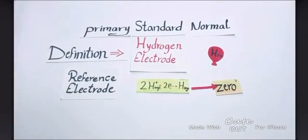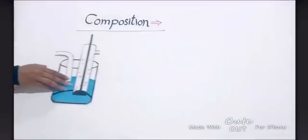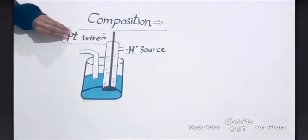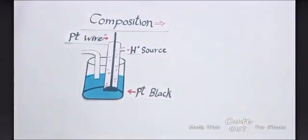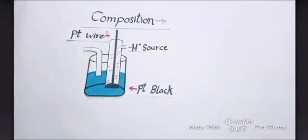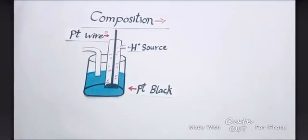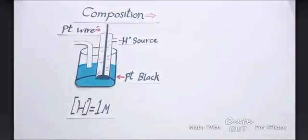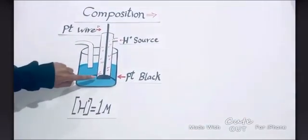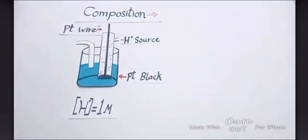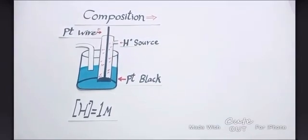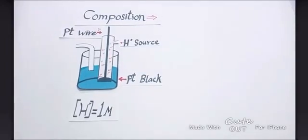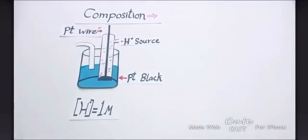Now we'll talk about its composition. It consists of a hydrogen source and a platinum wire coated with platinum black — a small square of platinum foil which is platinized. This is immersed in a solution with hydrogen ions at a concentration equal to 1 molar. Platinum black increases the surface area for the reaction to take place rapidly. The stream of hydrogen keeps the solution saturated with respect to the gas, and hydrogen gas is bubbled around the platinum electrode at a pressure of one atmosphere.